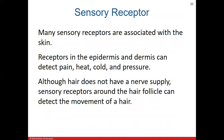Your skin also has sensory receptors — we'll discuss these in more detail when we get to the nervous system. These receptors can detect pain, heat, cold, and pressure. There are also sensory nerve endings that wrap around the hair follicle, giving you a very sensitive touch and feel to the movement of hair.